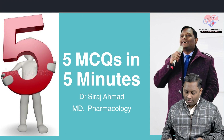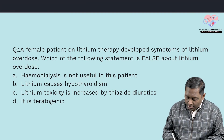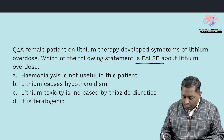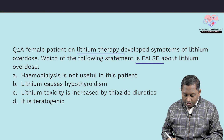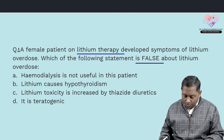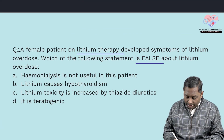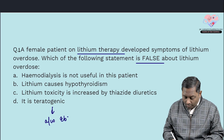The very first question is about a female who is on lithium therapy and she developed symptoms of lithium overdose. Which of the following statements is false about lithium overdose? Options include: hemodialysis is not useful, lithium causes hypothyroidism, lithium toxicity is increased by thiazide diuretics, and it is teratogenic. We all know lithium is teratogenic — it is associated with a condition known as Ebstein anomaly.